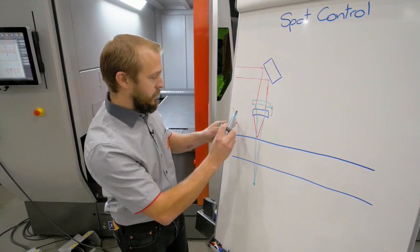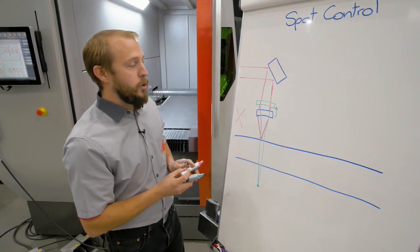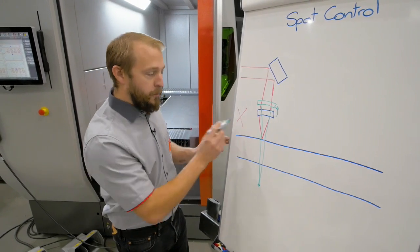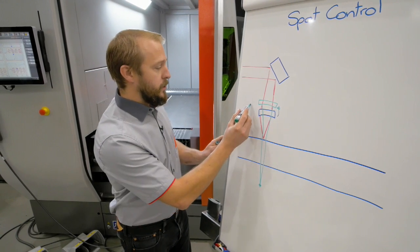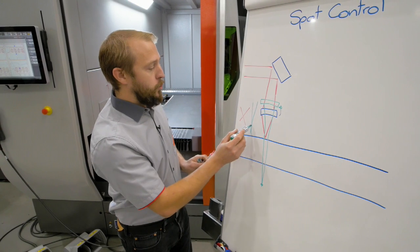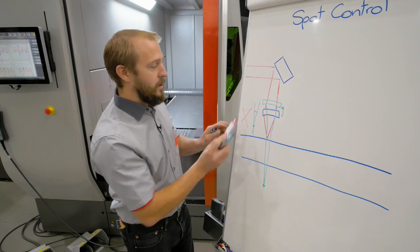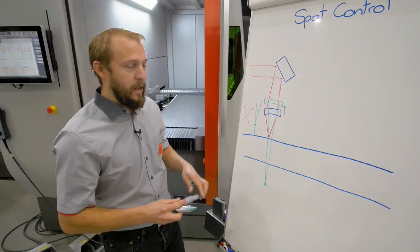One is a very big angle with a smaller spot, which is perfect for thin material. For thicker material, we are changing the shape to a slightly bigger spot, but as well quite a different angle. Now that makes the big difference.